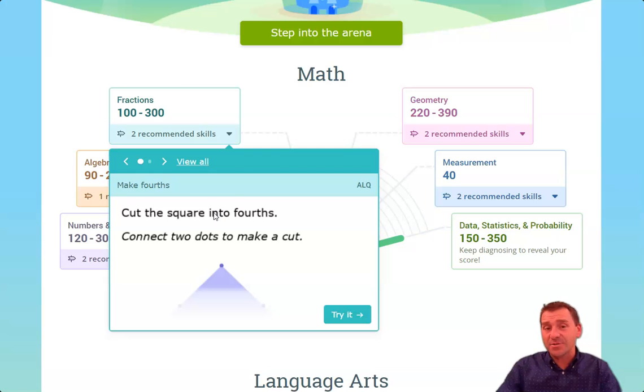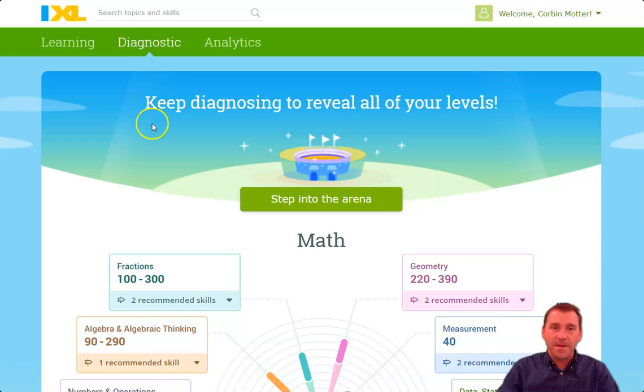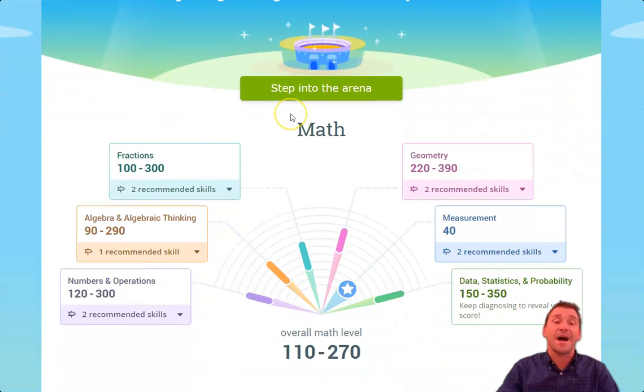So how do they get to the actual skill? They can either click right on the link right there, or they can go down here to try it. Either way, it takes them to the particular skill like this, and then they can start practicing it and going through it like all the other skills. That's how you find the skills that's being recommended by the diagnostic. That's the easiest way to do it.